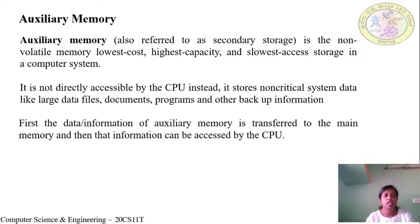What is auxiliary memory? An auxiliary memory is a second classification of the memory in a computer system. It is also referred to as secondary storage. It is non-volatile memory, which means the data is stored permanently even when power is switched off. It is the lowest cost, highest capacity, and slowest access storage.